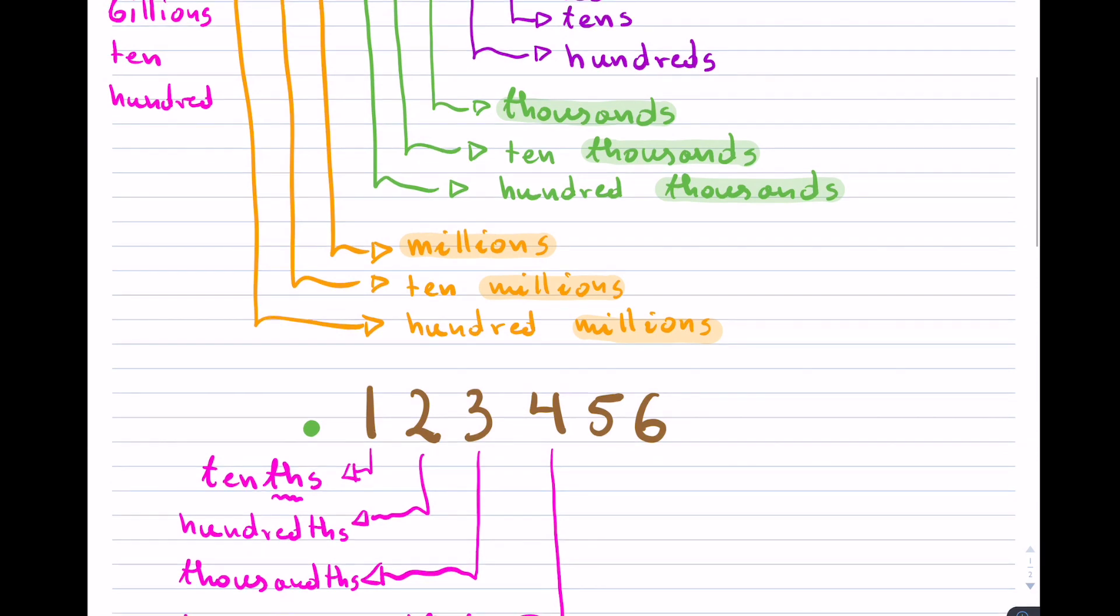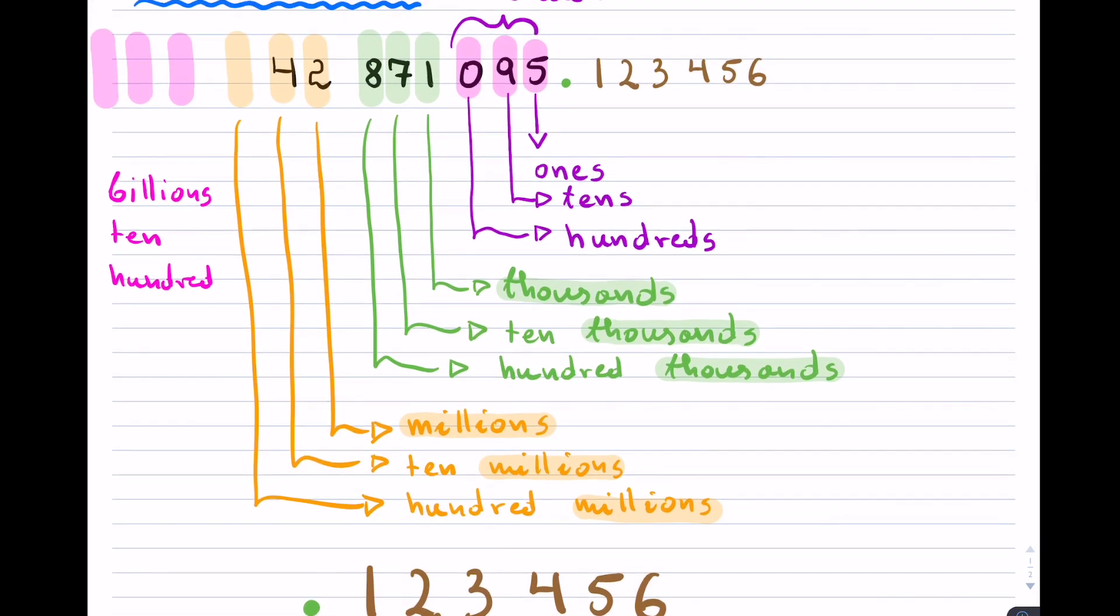If I scroll back up here, notice that what we're doing is, it's almost like we're creating a mirror image and we were going through. We had tens here, so this became tenths. We had hundreds next, this became hundredths with the th. Then it was thousands, so this became thousandths with the th.